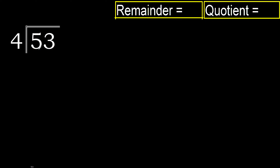53 divided by 4. 5 is not less, therefore we work with 5. 4 multiplied by which number is nearest to 5, but not greater?